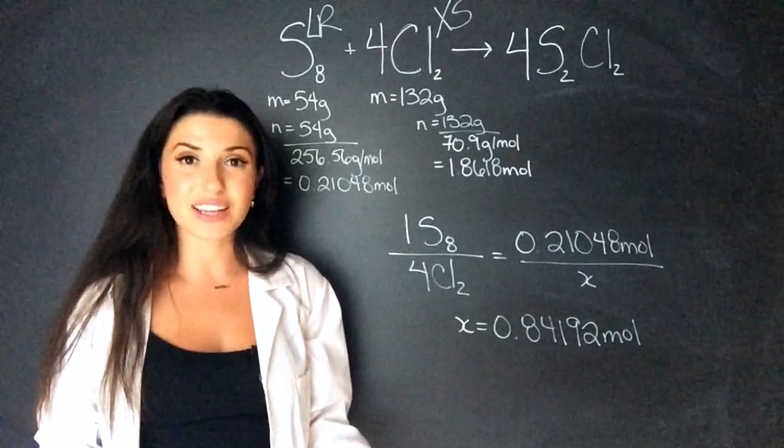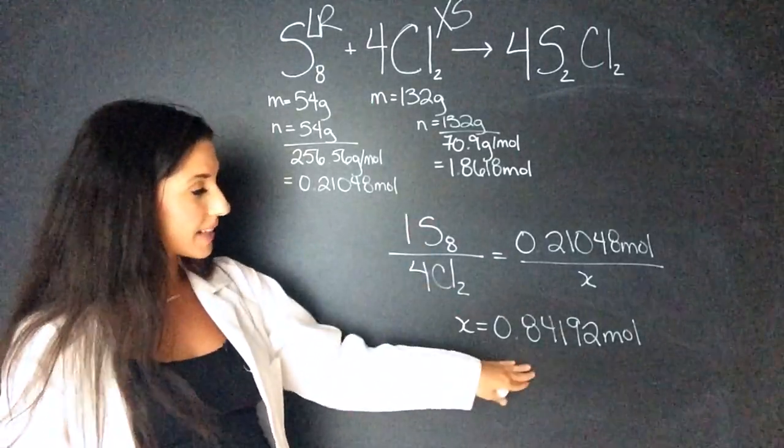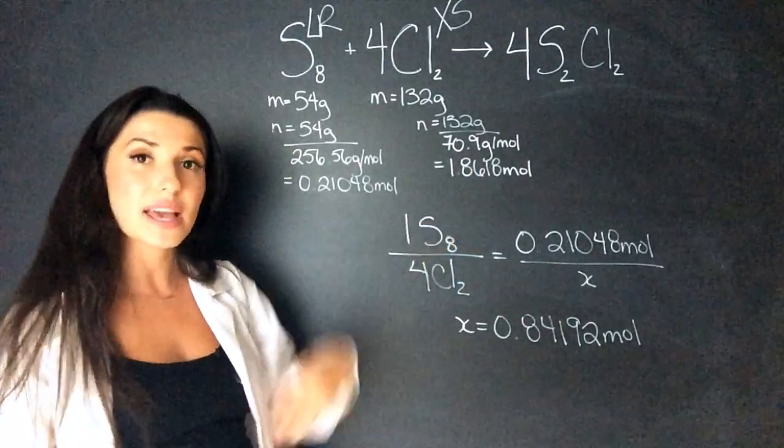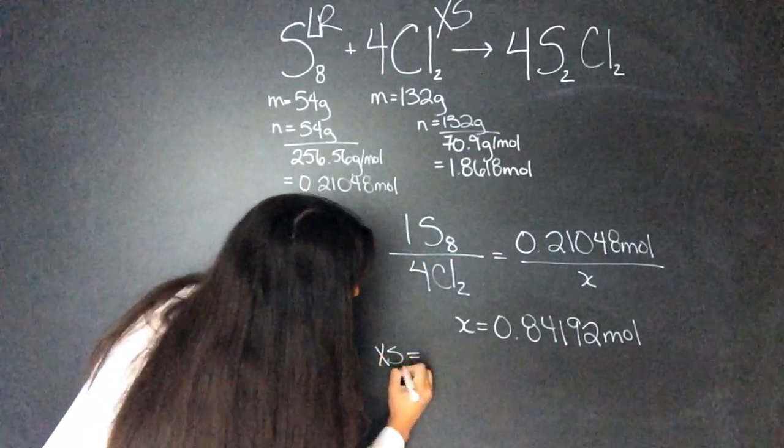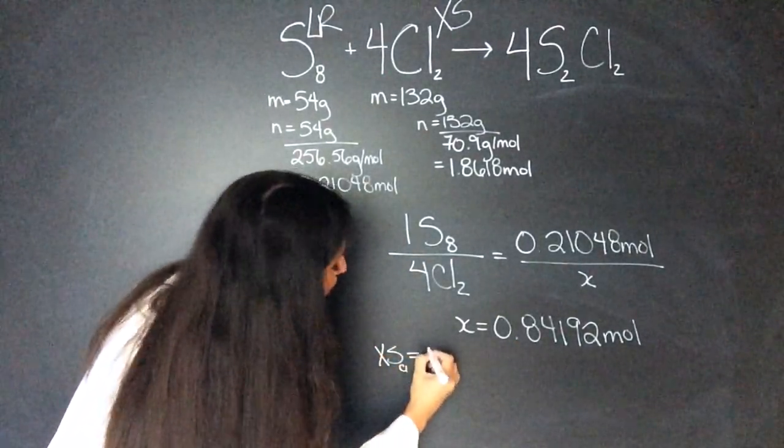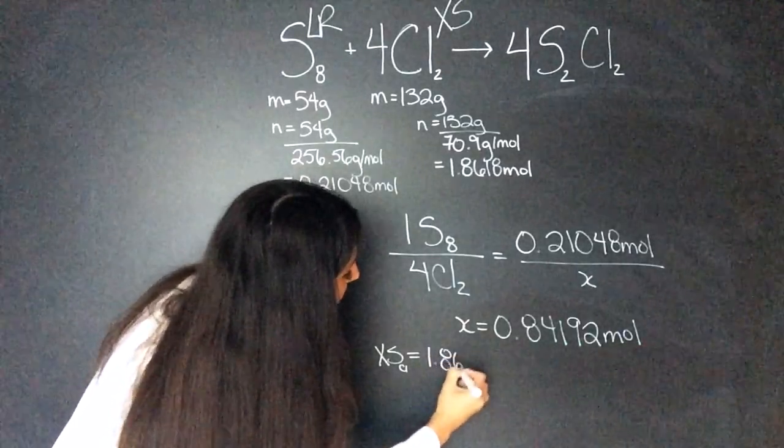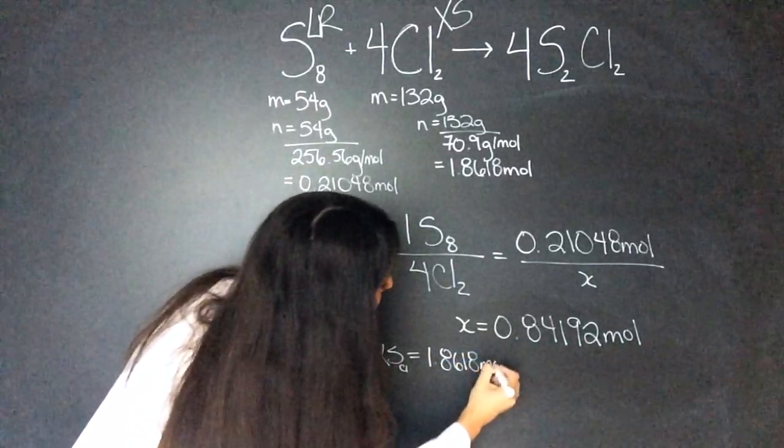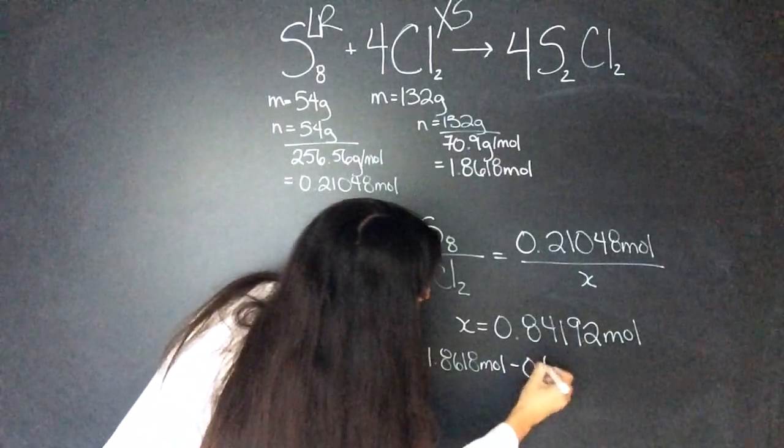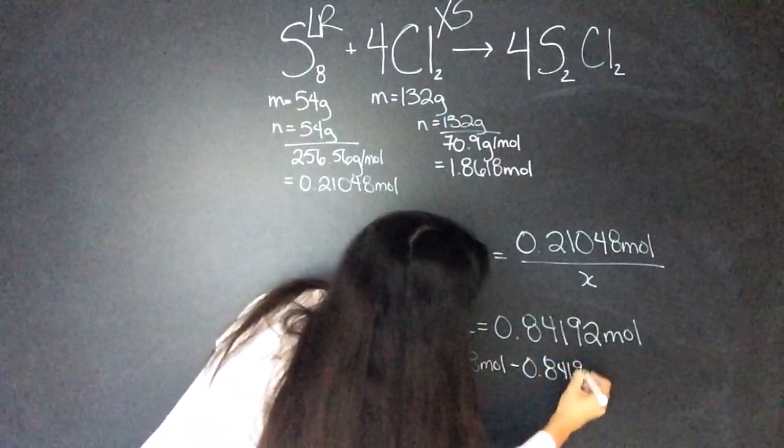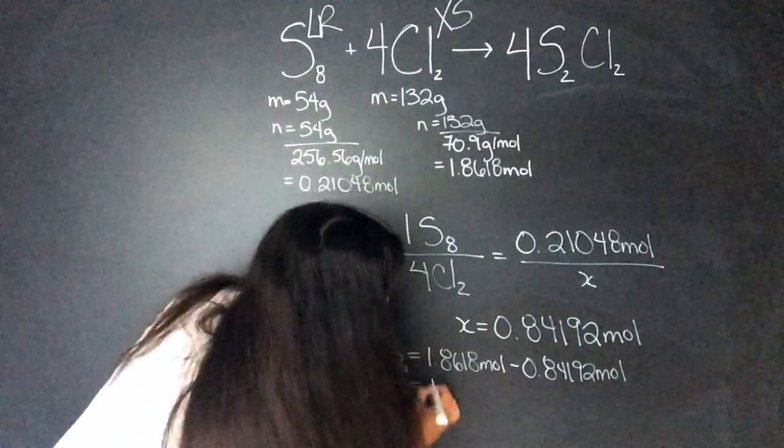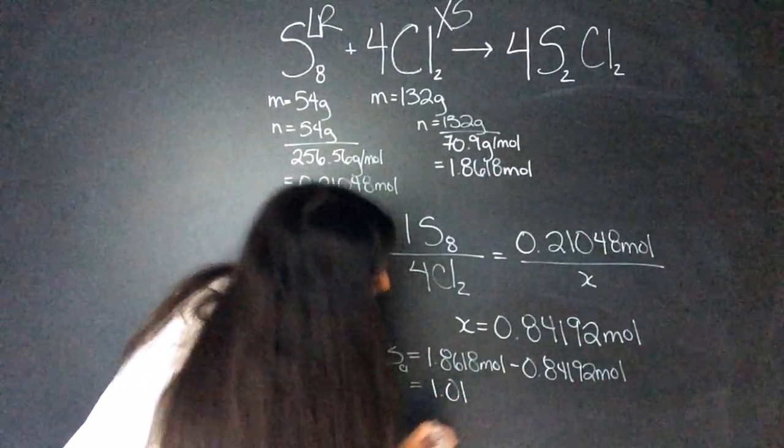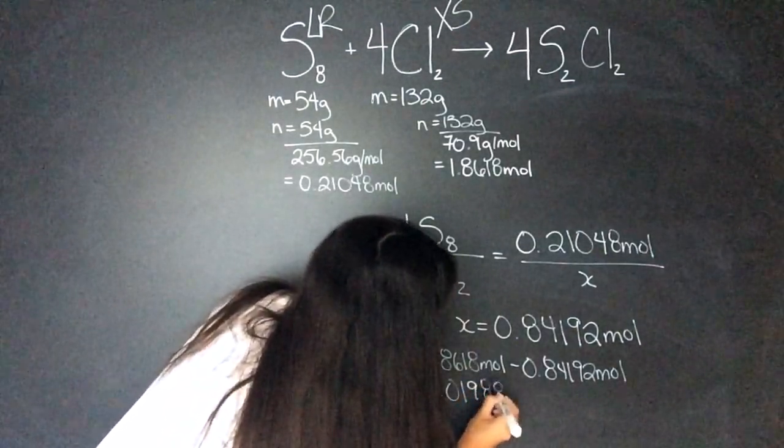Now to find out how much I'll have left over, I'm going to subtract this number from how many moles I actually have. So I'll put excess equals chlorine equals 1.8618 mole minus 0.84192. That leaves me with 1.01988 mole.